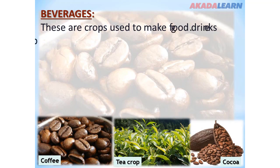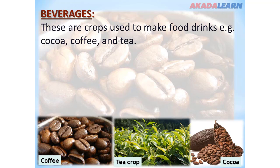Beverages are crops used to make food drinks. Examples of such crops include cocoa, coffee, and tea.